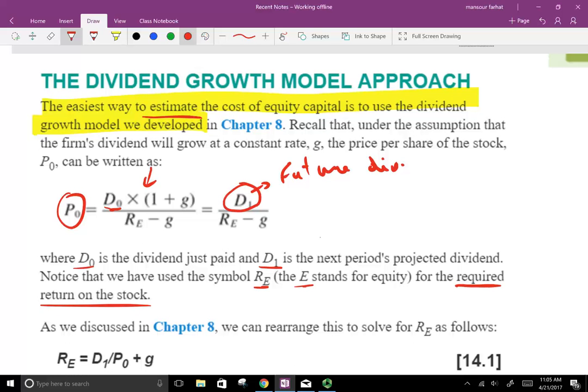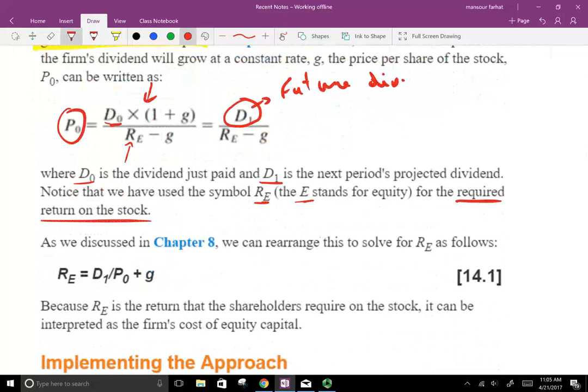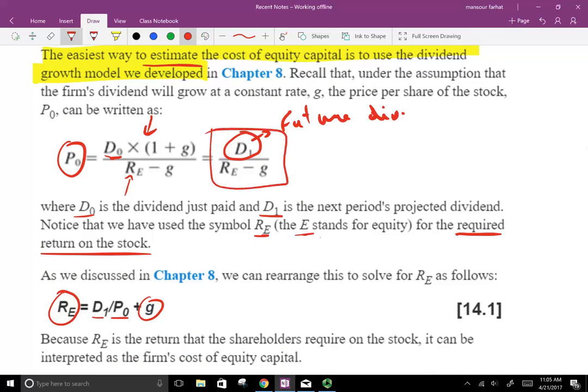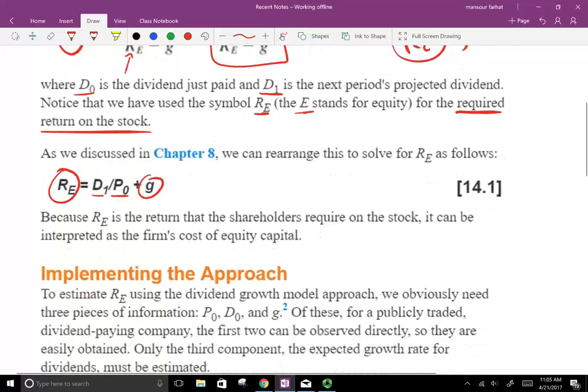So now, this is what we're looking for here - we're looking for the required return of the stock. If we rearrange the formula and solve for R_E, R_E equals D1, the future dividend, divided by the price plus the growth rate. We just took this formula, P0 equals D1 over R_E minus G, and we solved for R_E. So now we have the equation for the cost of equity.